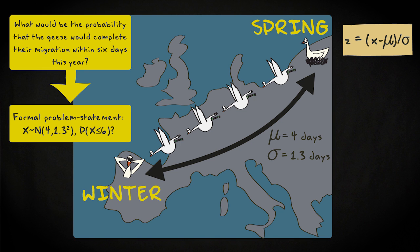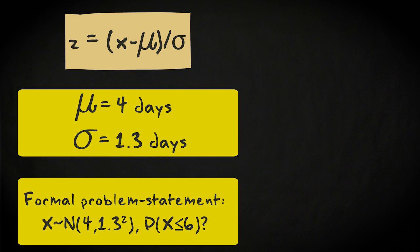First, you need to Z-transform the value of 6 days. You do that by subtracting the mean and dividing by the standard deviation. This gives a value of 1.54.